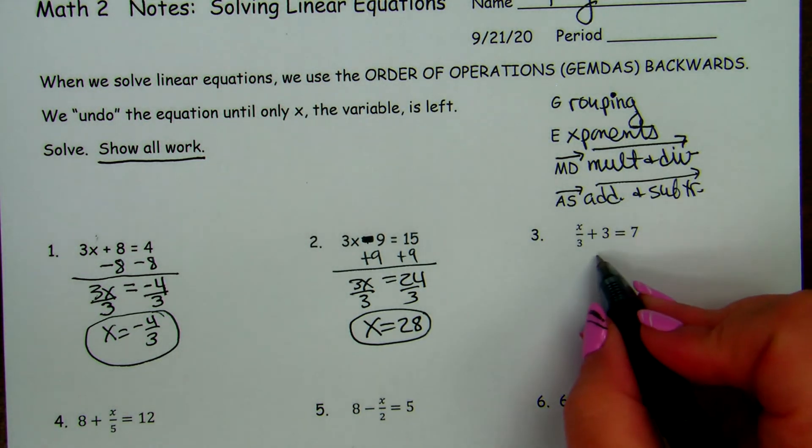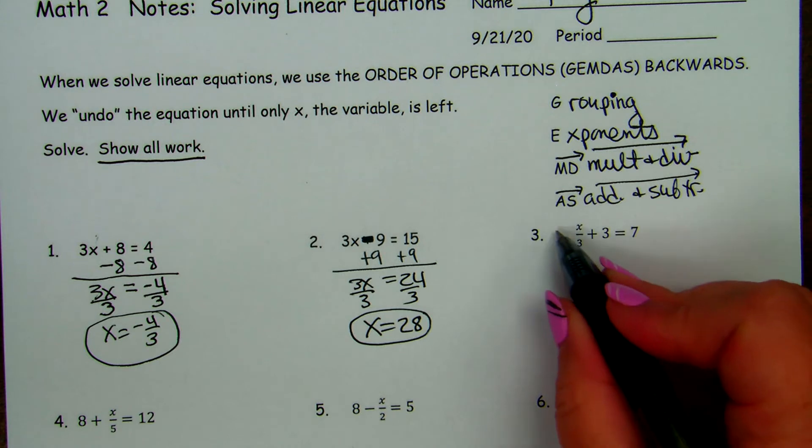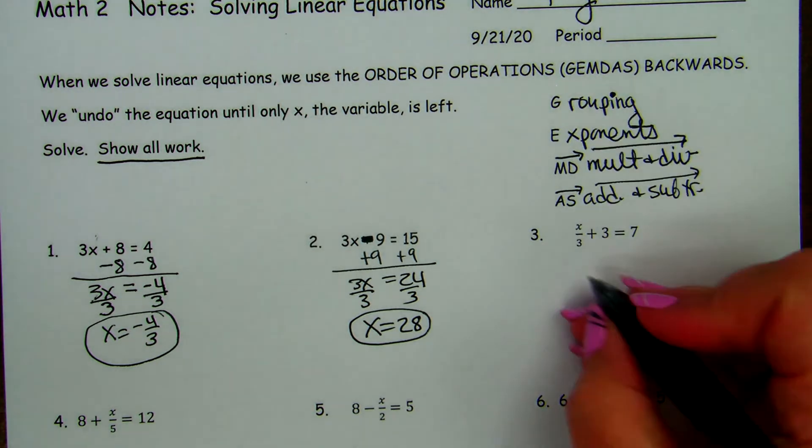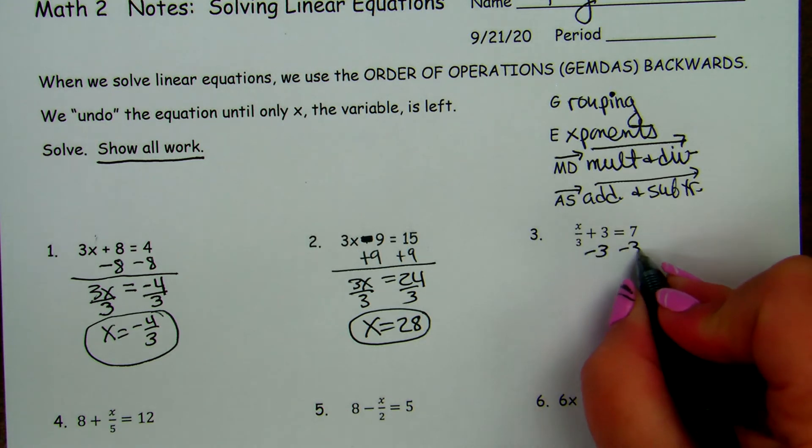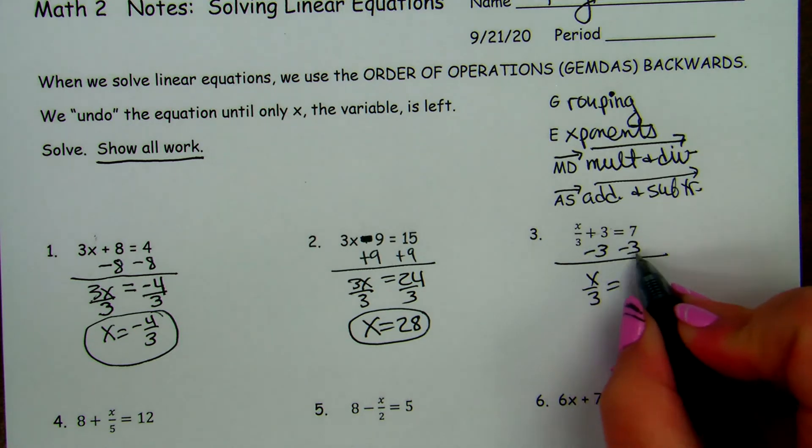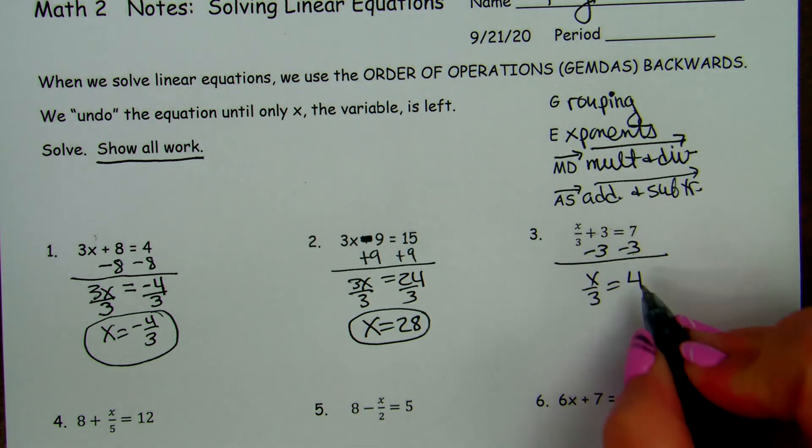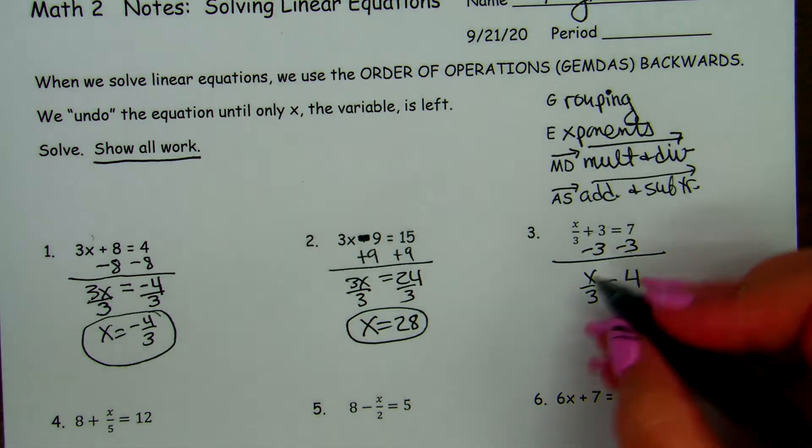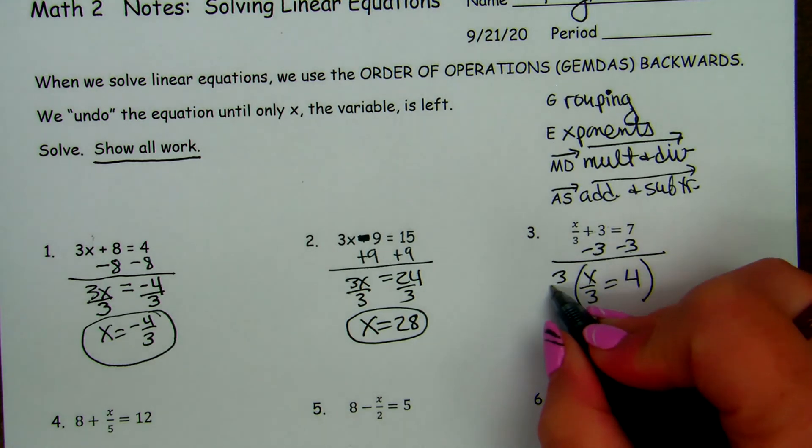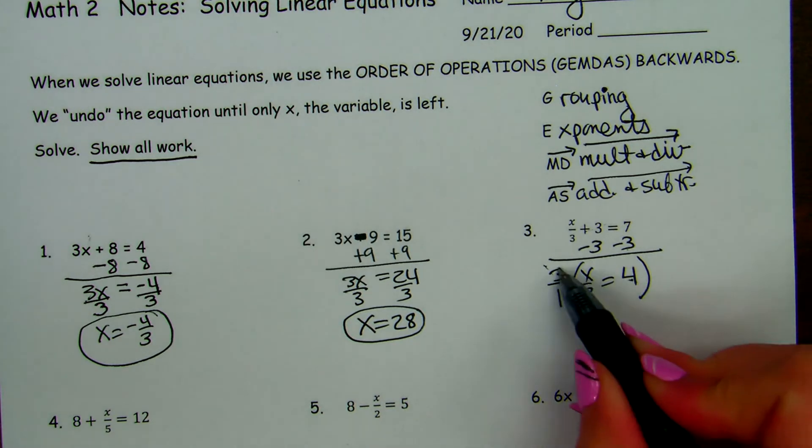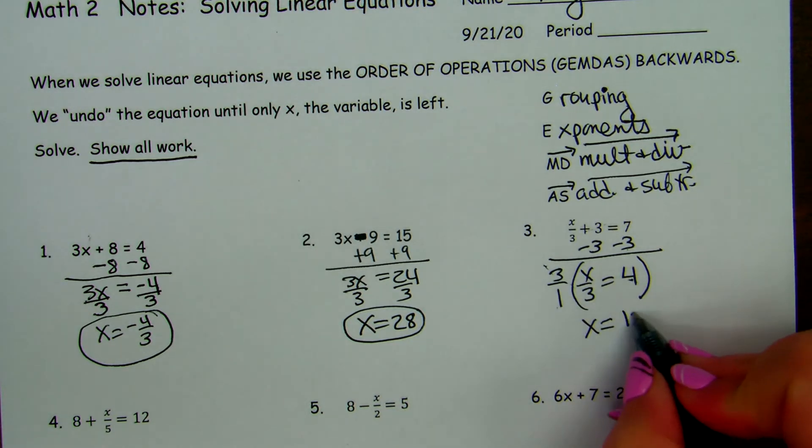And then on this problem, do we multiply first to cancel these, cancel the 3's, or do we subtract first? Which one's on the bottom of the order of operations? Subtraction. So we do the opposite of the plus 3, minus 3. We get x over 3 equals 7 minus 3 is 4. And then this is a division, and we're going to do the opposite of the division. We're undoing the work, doing the opposite. So we're going to multiply the whole thing by 3 over 1. So the 3's cancel, and we get x equals 4 times 3 over 1 is 12.